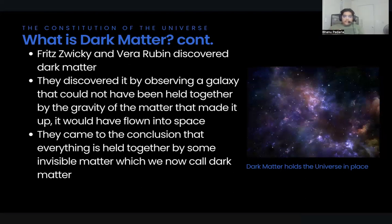One key reason scientists believe dark matter exists is that when they observed the universe, all the visible matter does not have enough gravity to hold galaxies together — everything should just fly off into space in random directions. That's how the concept of dark matter came into existence.